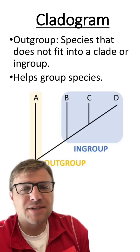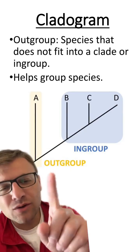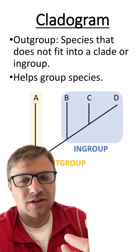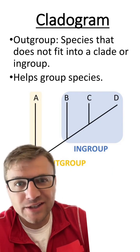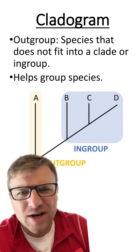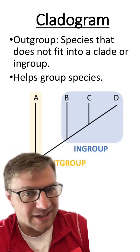Now, sometimes in cladograms they include something called the outgroup. The outgroup is not going to fit into a particular clade or ingroup. This helps us sort out what a grouping of a clade is.